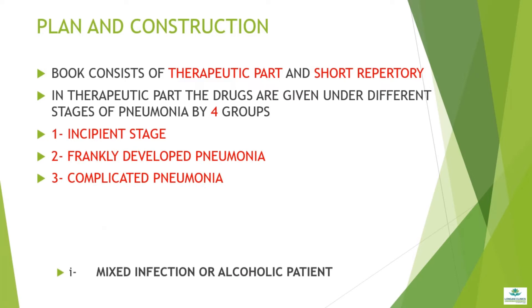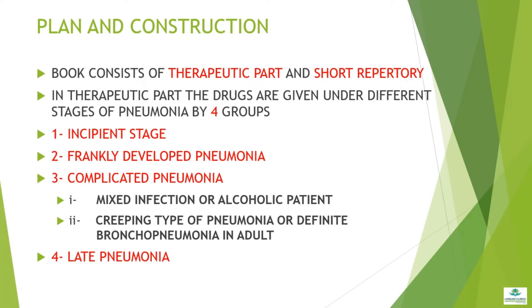Now we will see the plan and construction of the book. It consists of a therapeutic part and a short repertory. In the therapeutic part, drugs are given under four groups: first, incipient stage; second, frankly developed pneumonia; third, complicated pneumonia (with subparts: mixed infection or alcoholic patient, and creeping type of pneumonia or definite bronchopneumonia in adult); and fourth, late pneumonia.